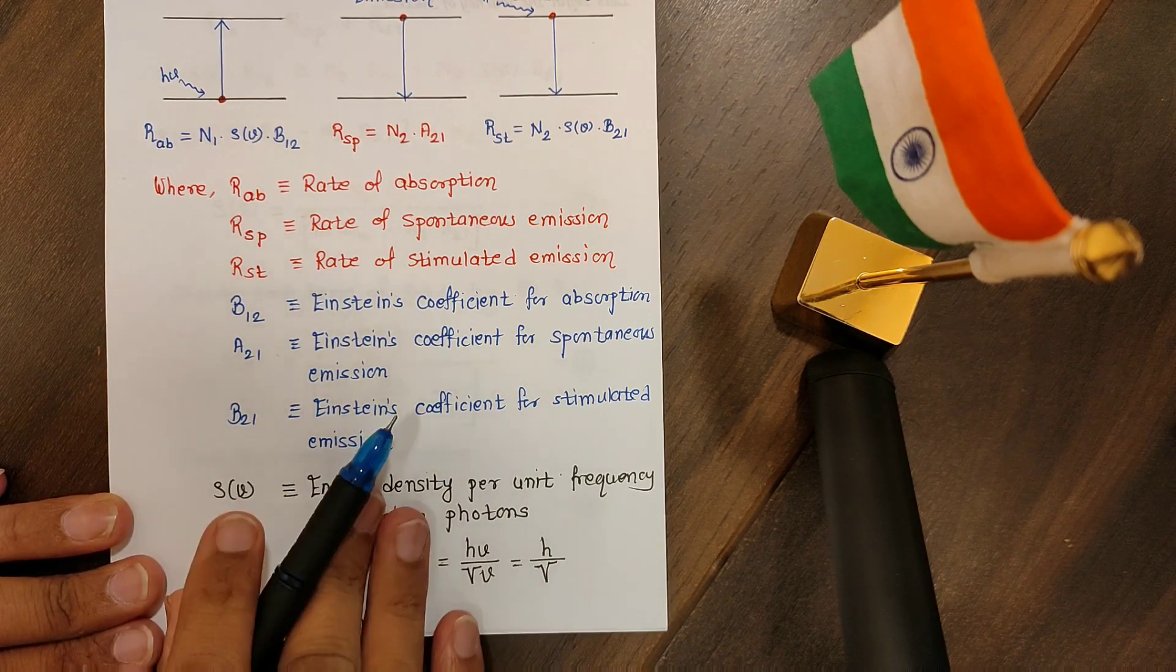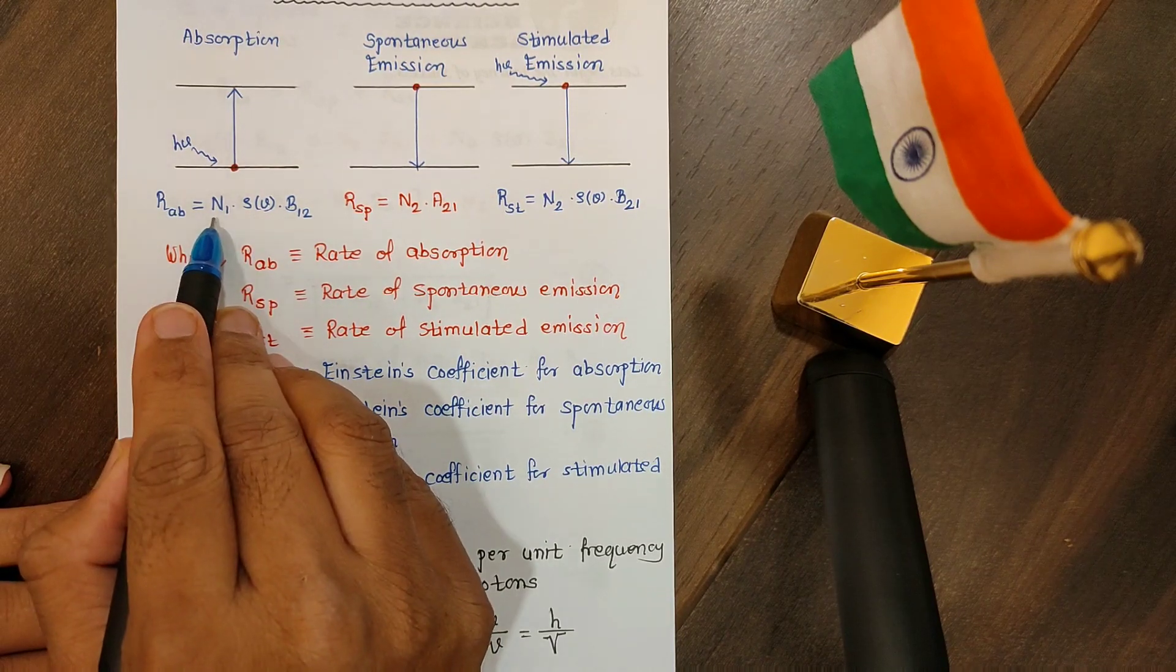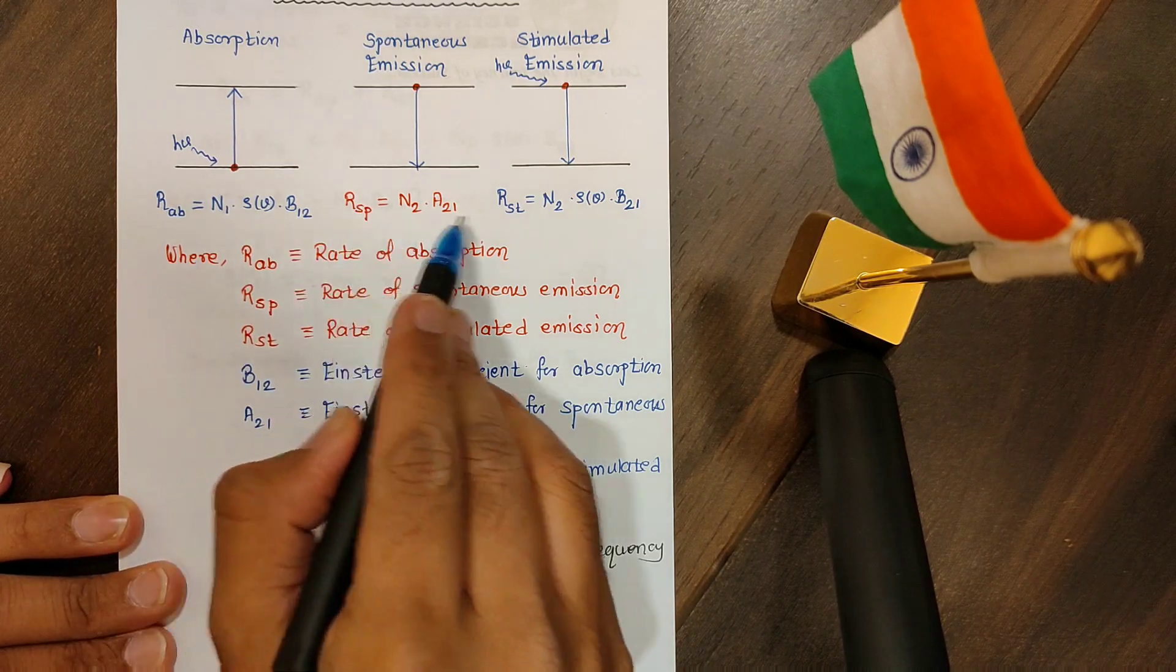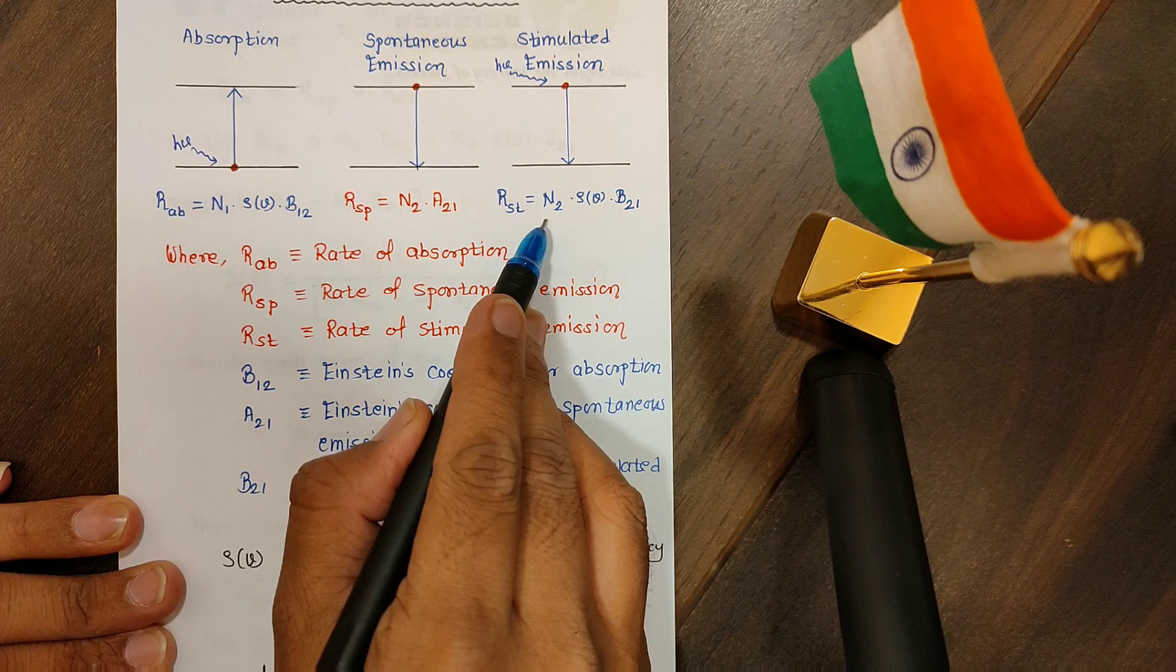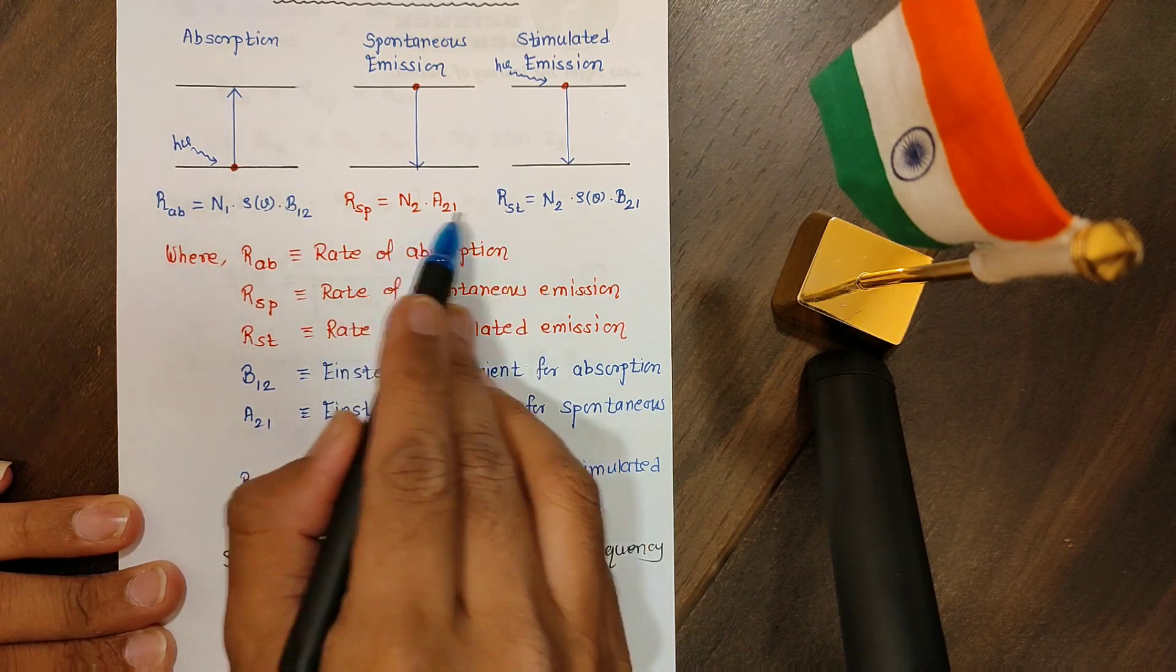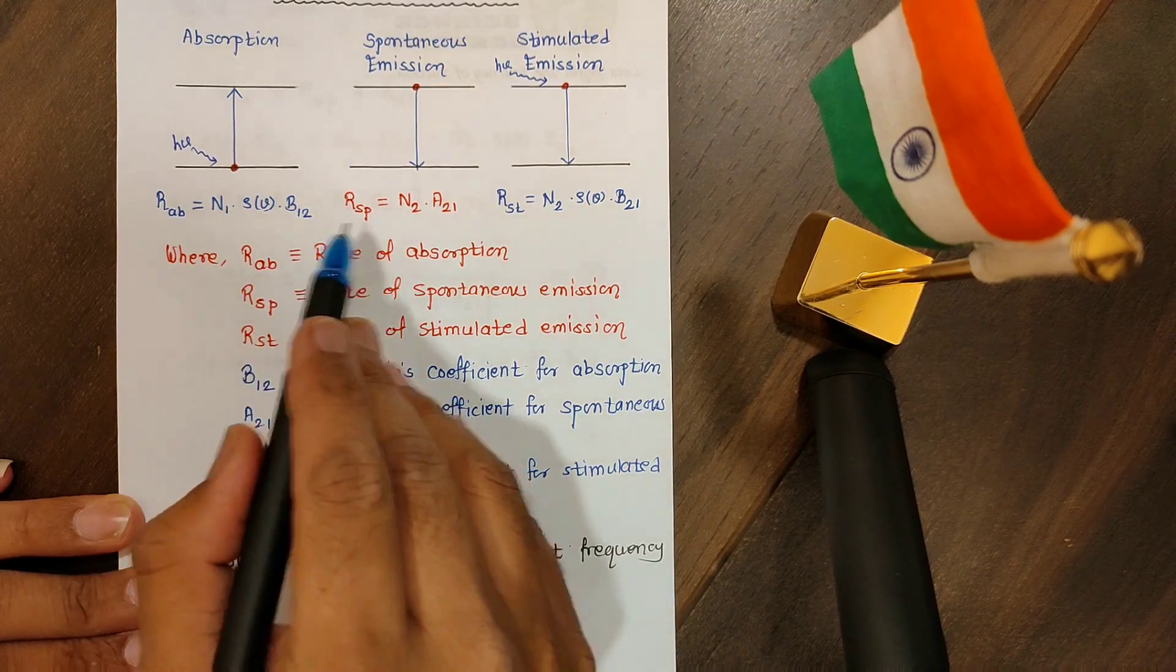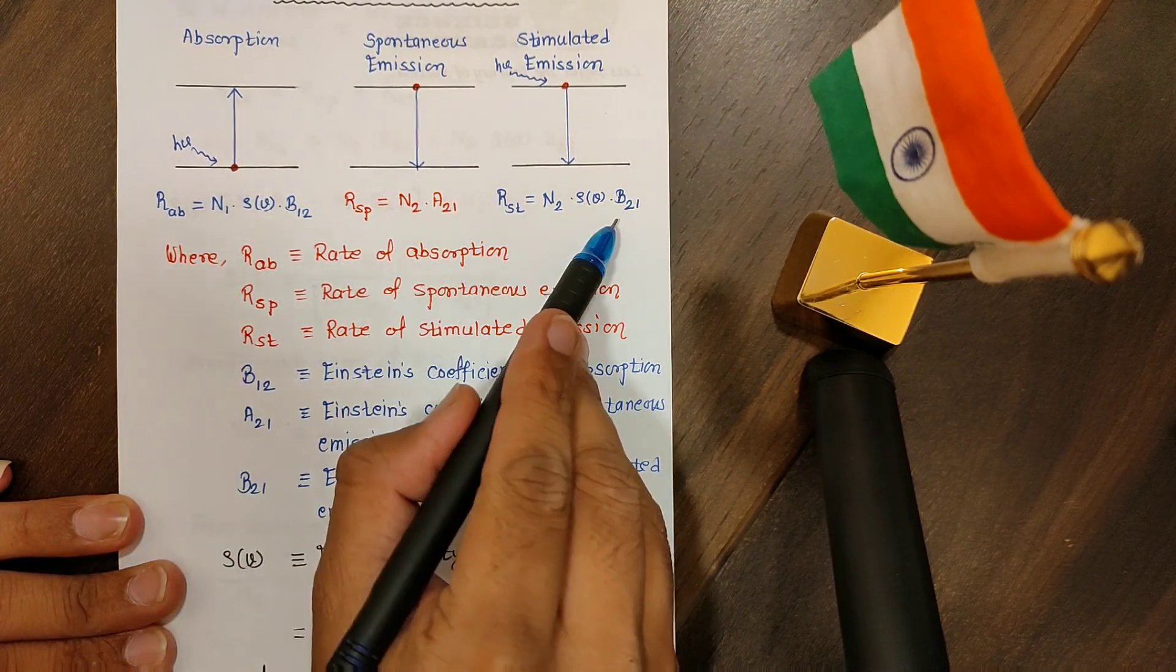H is the Planck's constant, unit joule second. V is the volume, the unit is meter cube. Be careful with the meaning of rho which is the function of nu. In the first case I am writing n1, which is the number of electrons or atoms in the lower level.